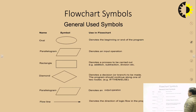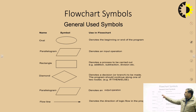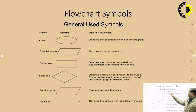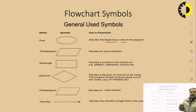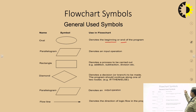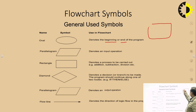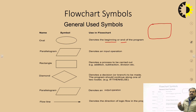Now we move on to understand the symbols used in the flowchart. The oval symbol is generally used to represent the beginning and end of the flowchart — both use the same symbol. We can use an oval, or sometimes a rounded rectangle, for the starting or ending point of the flowchart.